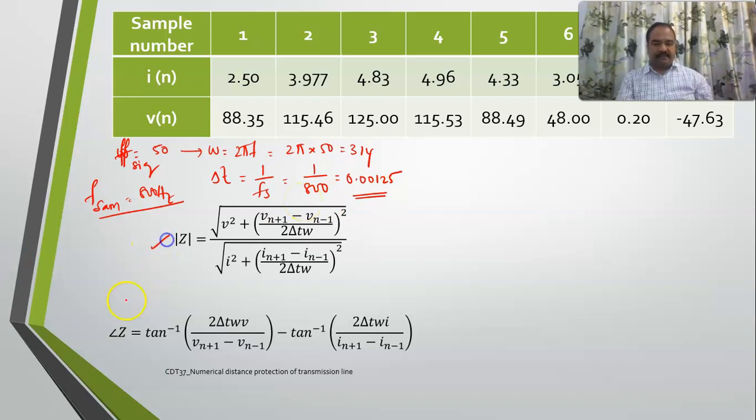For determining the impedance magnitude and angle, you do require 3 samples. As I have already mentioned, 3 samples are required, apart from this omega and delta t. Omega I do have, delta t I do have.